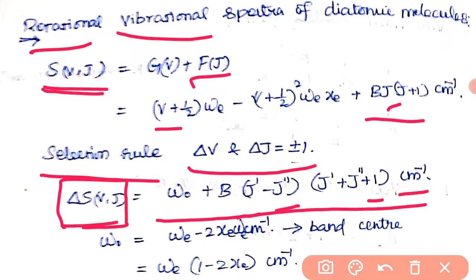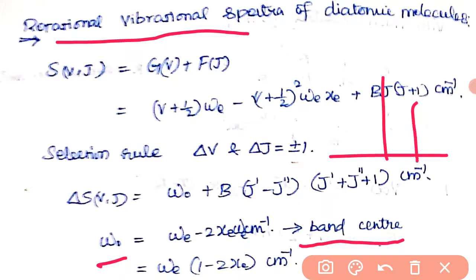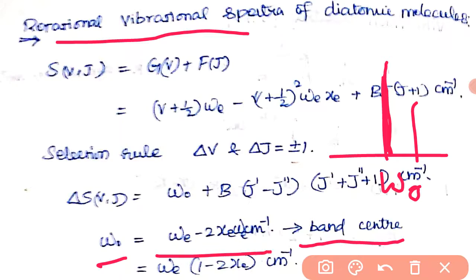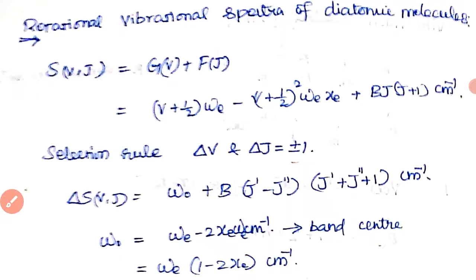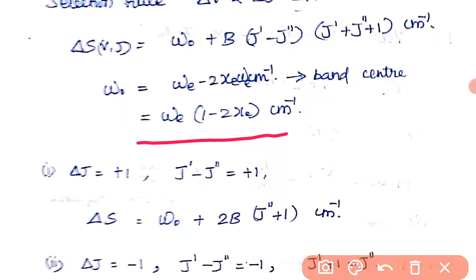In terms of wavenumber (cm⁻¹), we introduce the ω₀ term. That is nothing but ωₑ − 2xₑωₑ cm⁻¹. In the rotational vibrational spectra, the band center is represented by ω₀. So ω₀ = ωₑ(1 − 2xₑ) cm⁻¹.